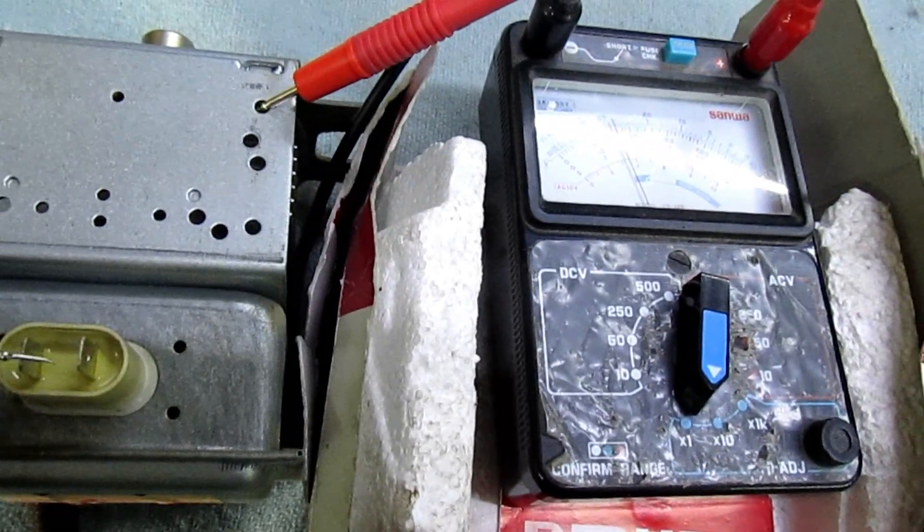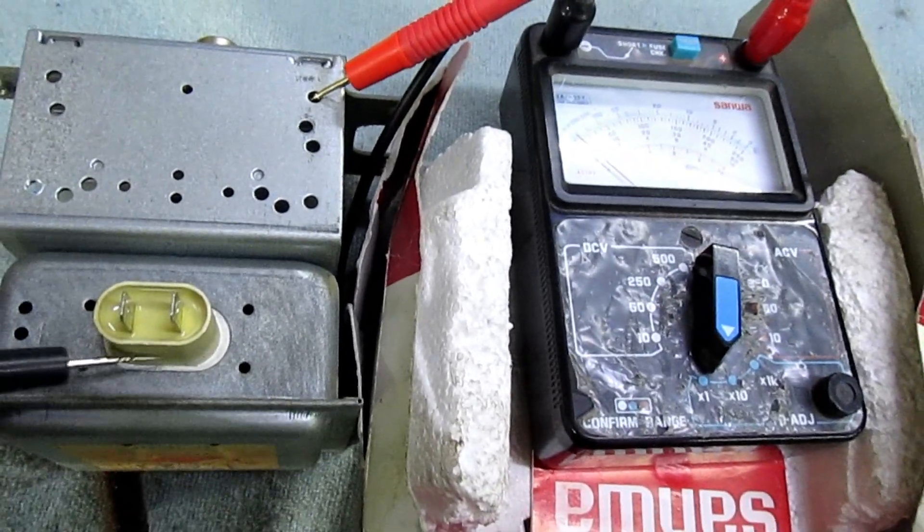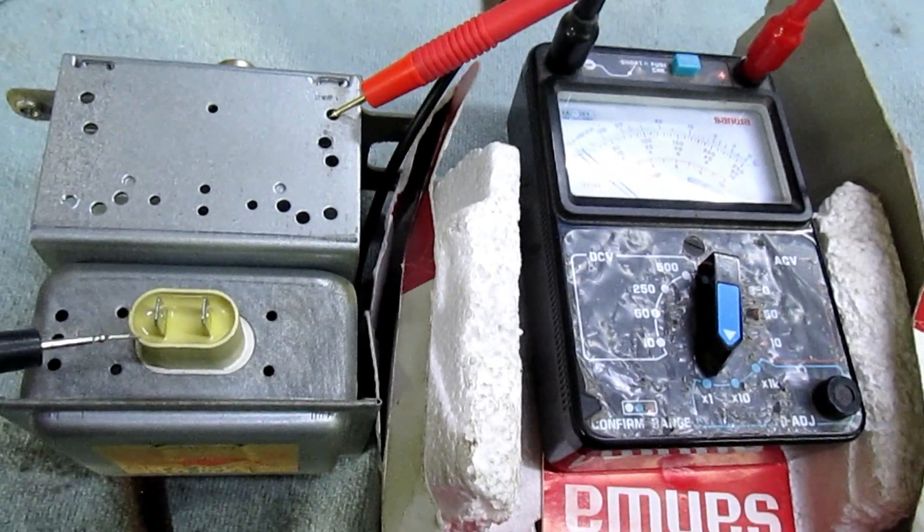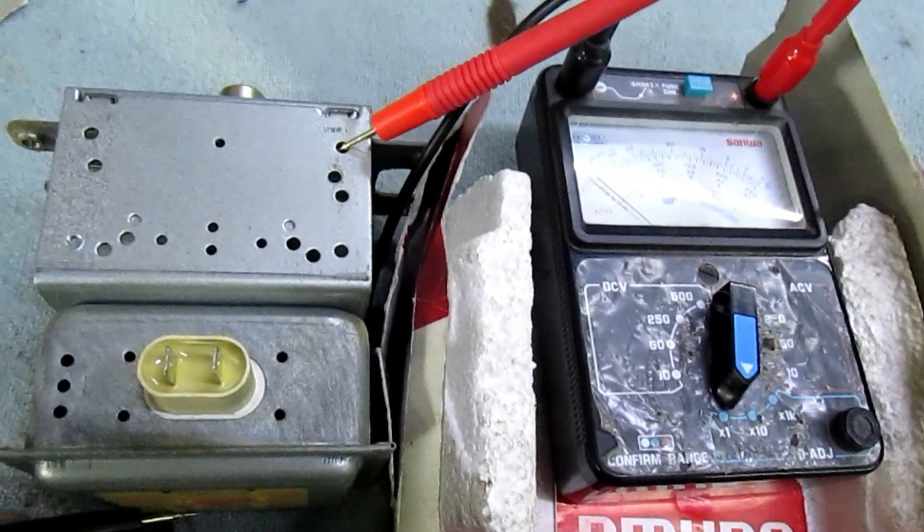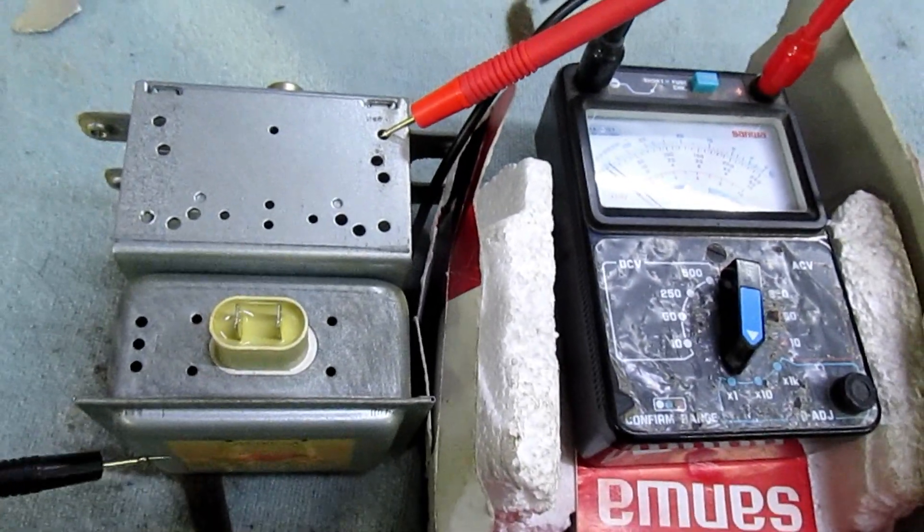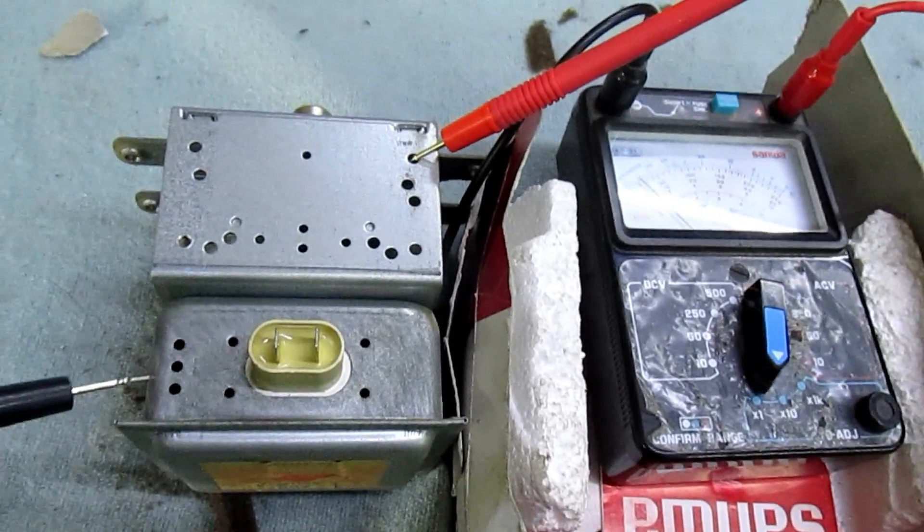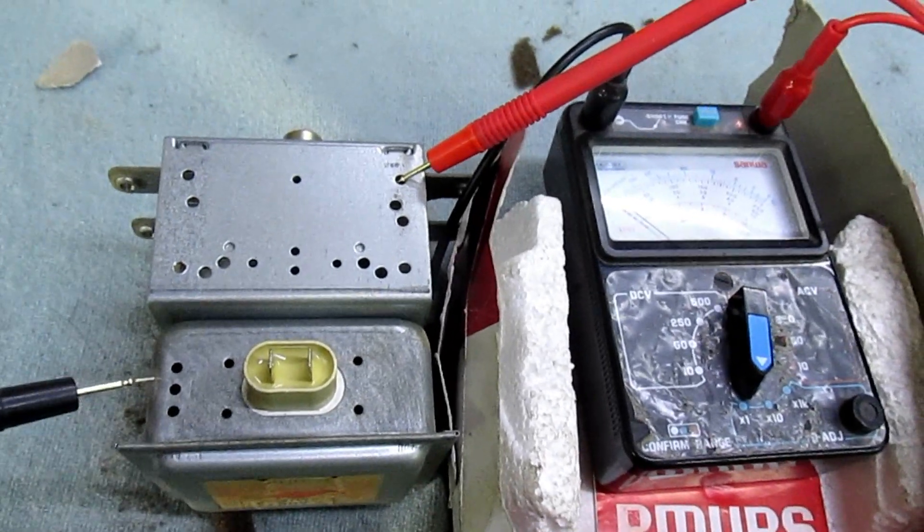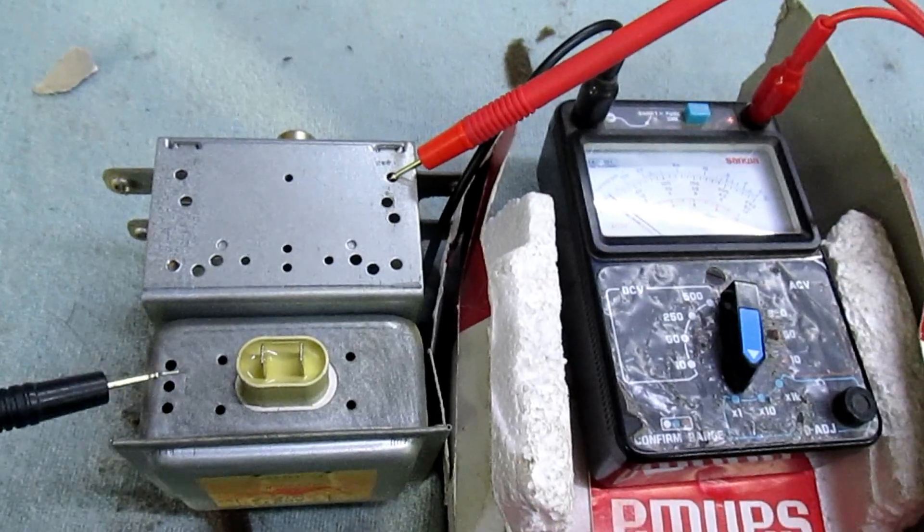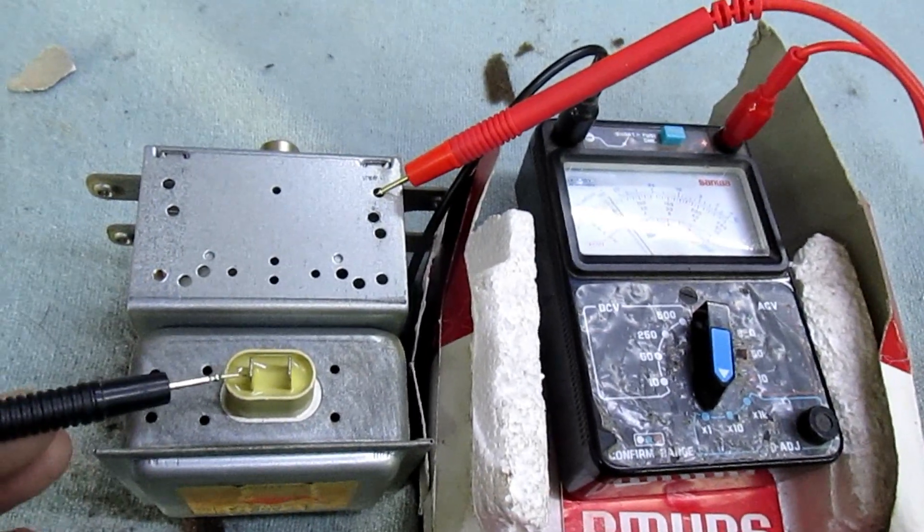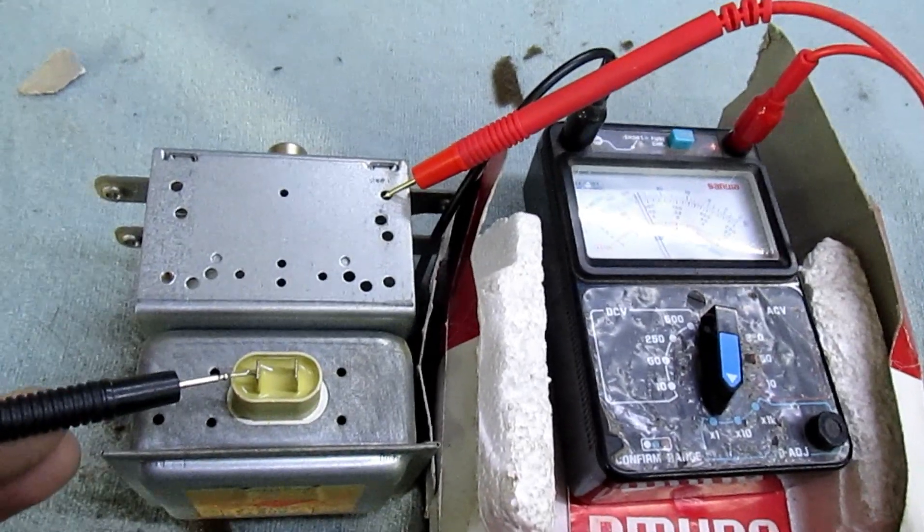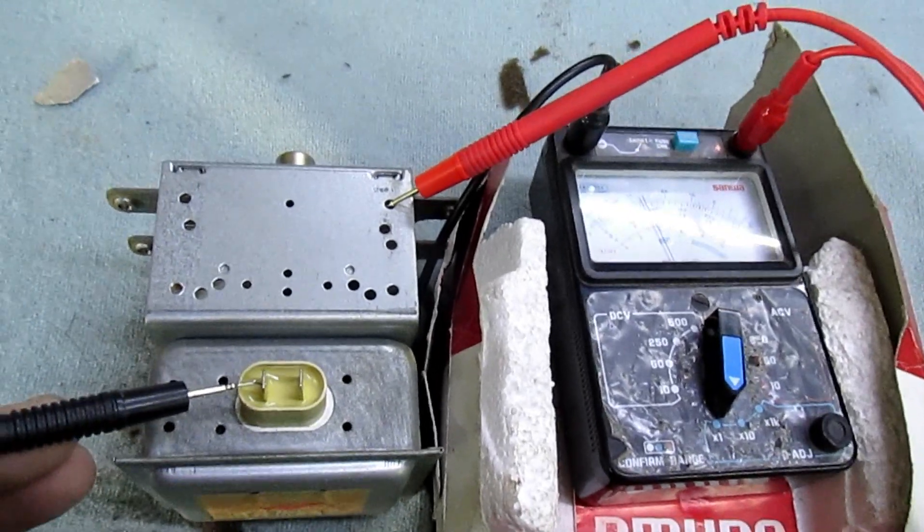Now what a lot of people don't realize is this filament terminal is actually two 350 pF capacitors with a couple of chokes inside. It actually forms a pi filter and it stops interference generated in the magnetron getting back onto the mains. Now a lot of people don't realize this is actually two times 350 pF feed-through capacitors.